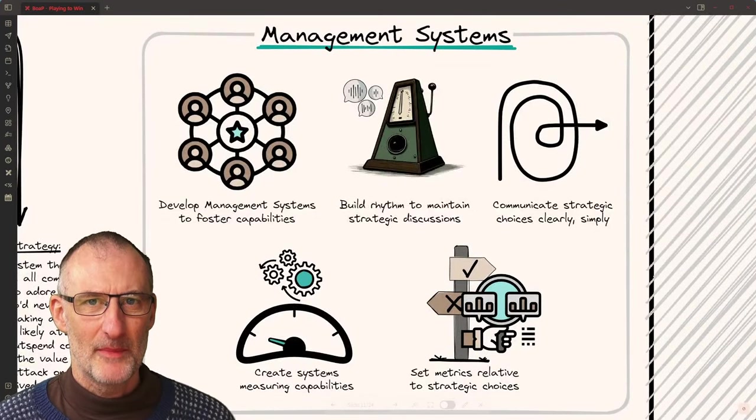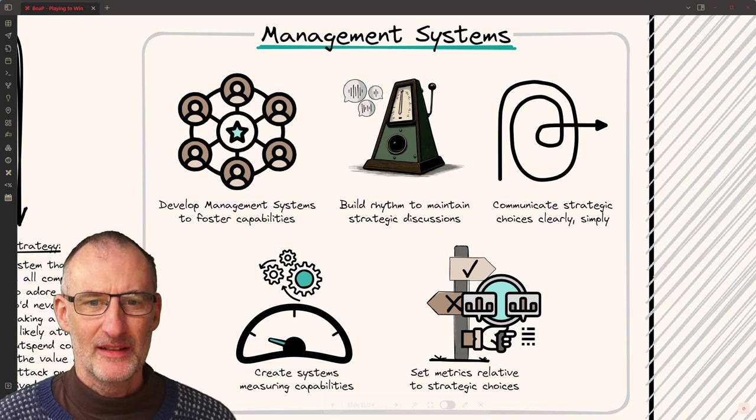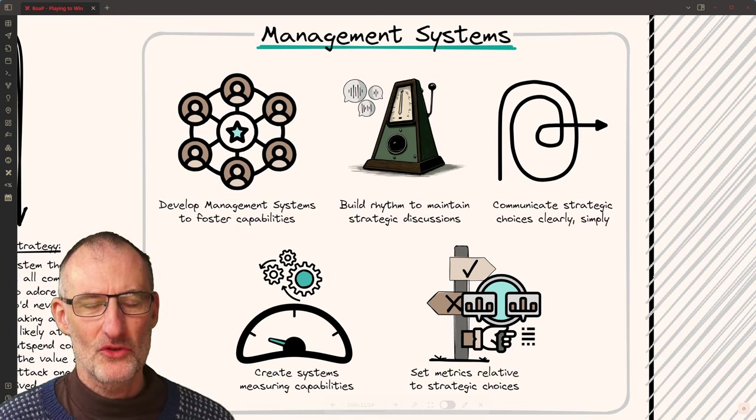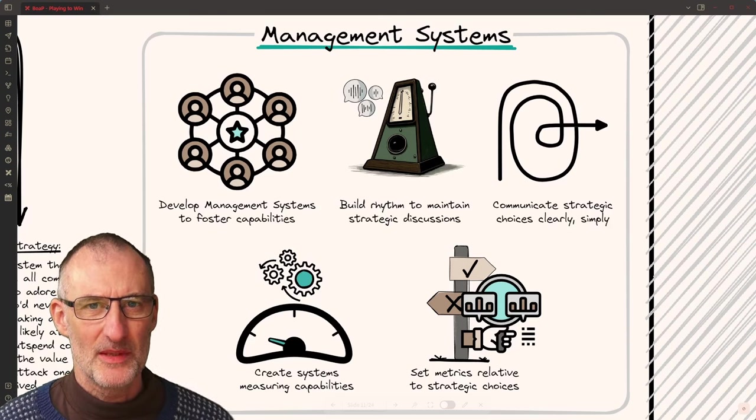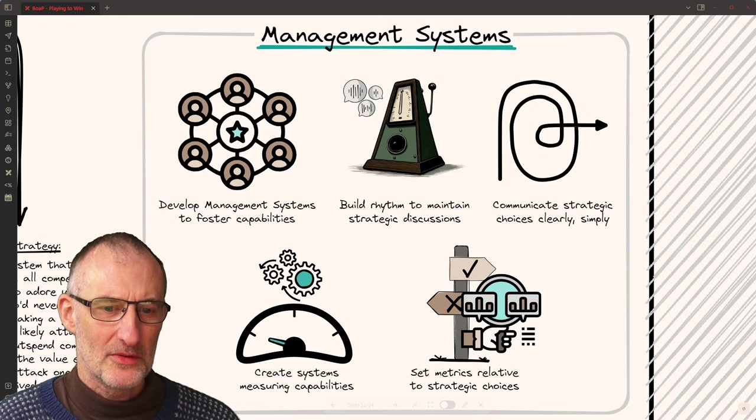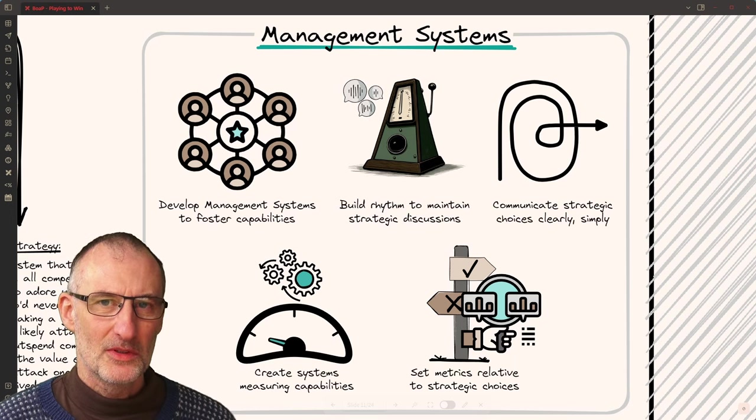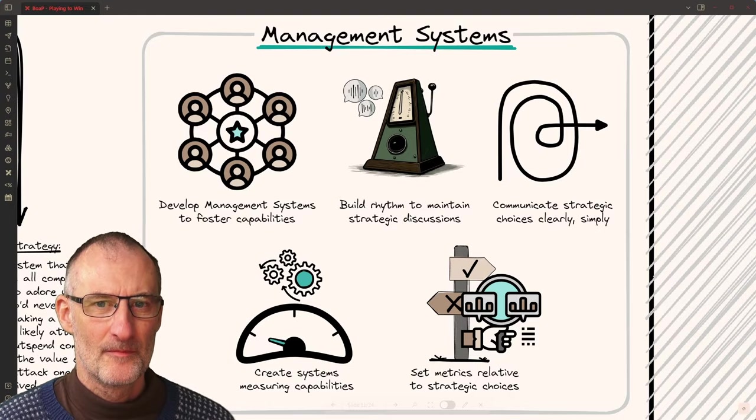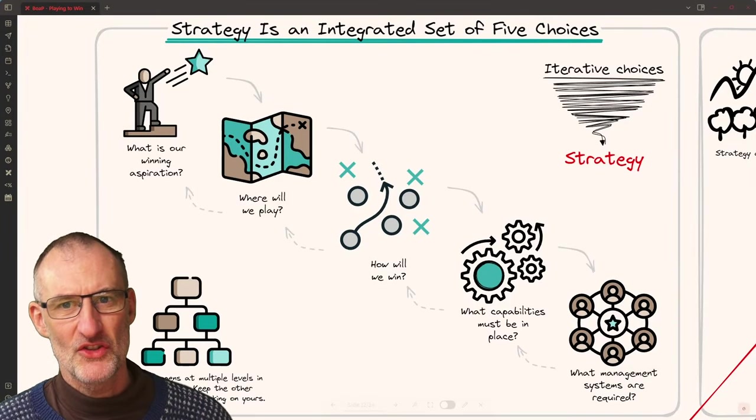And finally you need to create management systems to keep you on track in terms of your strategic journey. This means that you want to build a rhythm of talking about strategy and revisiting your core choices. You want very clear and simple communication to your organization so people understand what the strategy is. You want to create metrics so that you can measure that you're developing your core capabilities. And you want to also create metrics that will measure your strategic choices. So in a nutshell, these are the five elements of the strategic cascade.